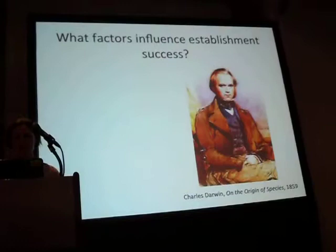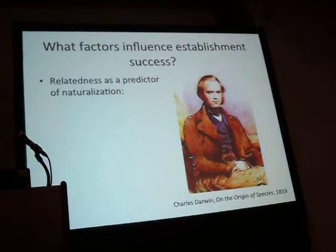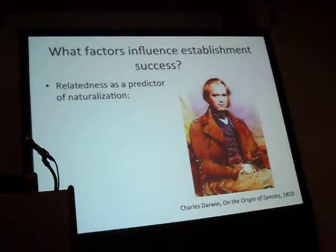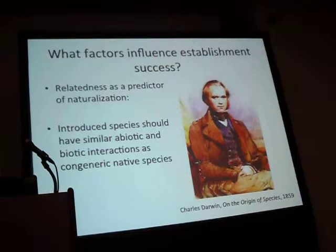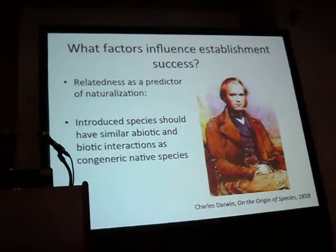Questions about how we can use phylogenetic information to predict these patterns go back to Charles Darwin. He thought that you could use relatedness between species that are native in the environment and species that are introduced, in order to determine whether those species have become naturalized or not. You would expect that closely related species share similar niches, and so they'll have similar abiotic environments that favor them, and also similar types of species interactions that will affect their success.